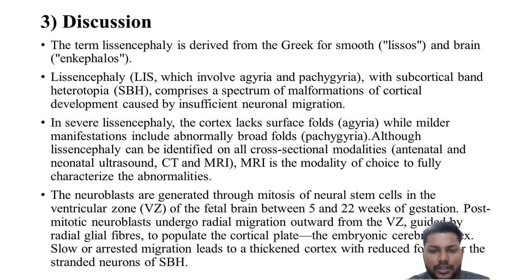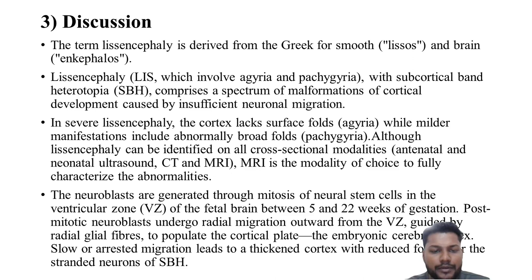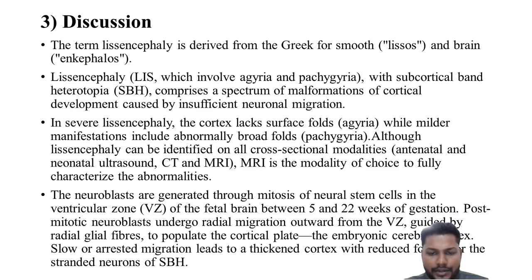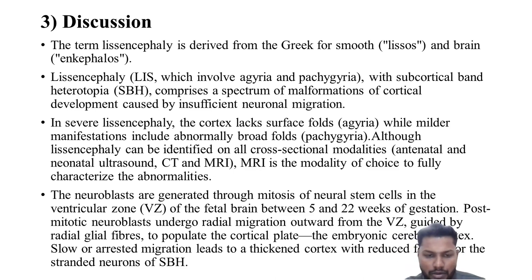Neuroblasts are generated through the mitosis of neural stem cells in the ventricular zone of the fetal brain between 5 and 22 weeks of gestation. Post-mitotic neuroblasts undergo radial migration outward from the ventricular zone guided by radial glial fibers to populate the subcortical and embryonic cerebral cortex. Slow or arrested migration leads to thickened cortex with reduced neurons, or the arrested neurons form a subcortical band heterotopia.